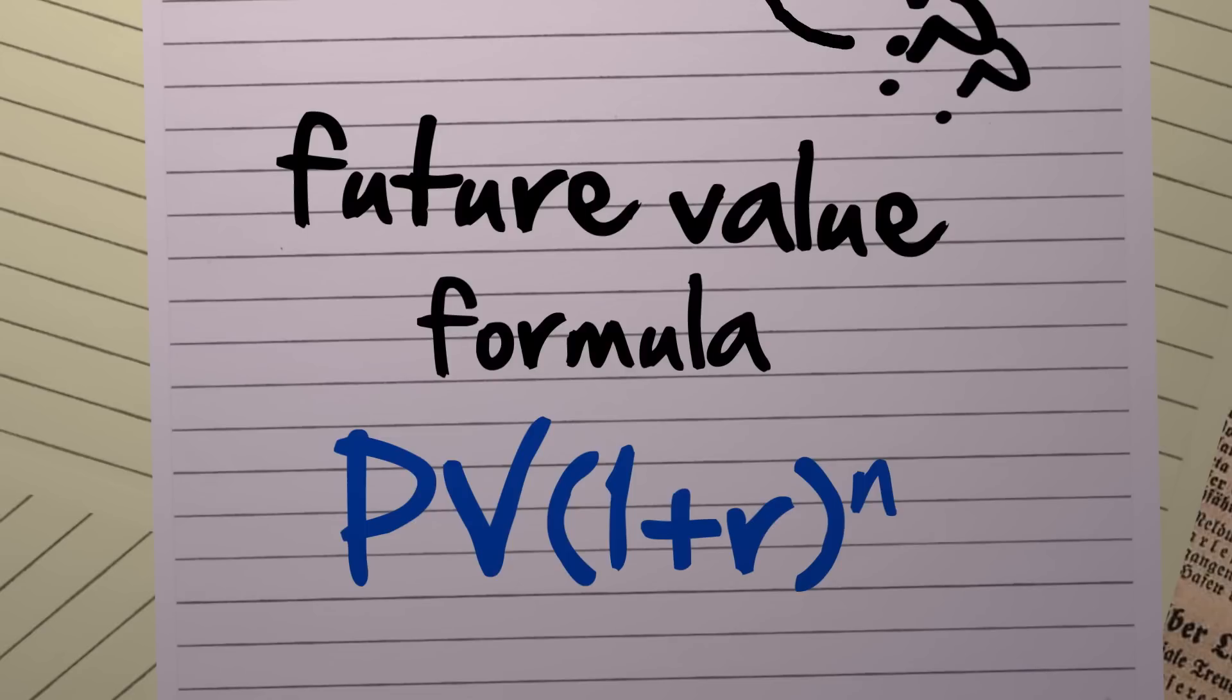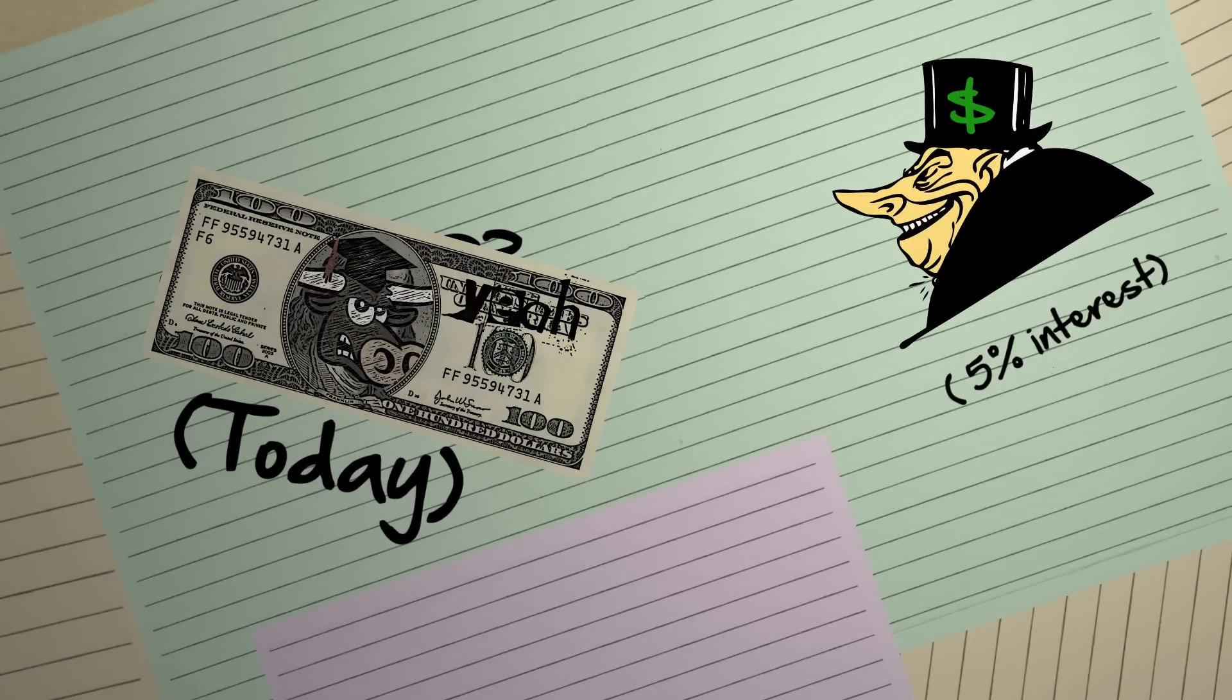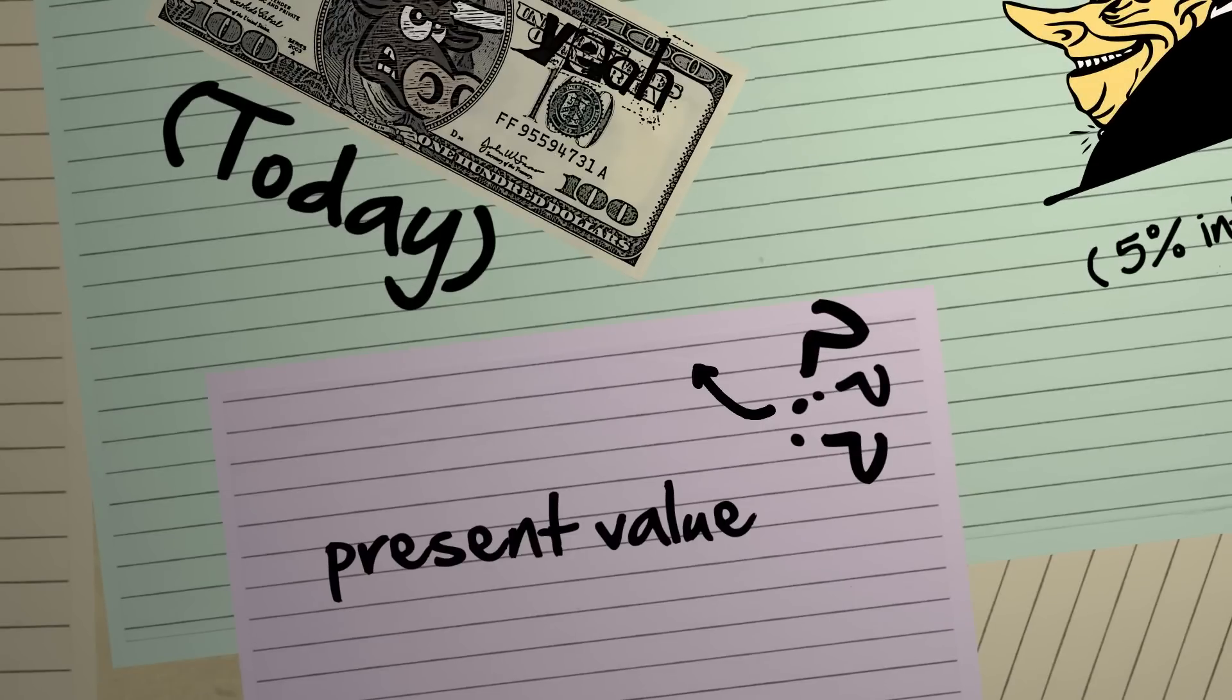More on this later. Don't worry, I promise it is much easier than it looks. Going back, what is the name of your original $100 today? It is called Present Value because present means today.